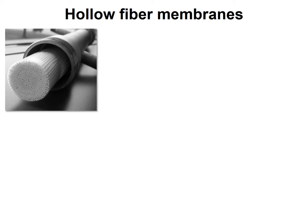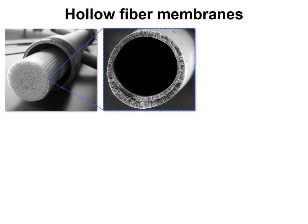In our lab, we develop new types of hollow fiber membranes. We can assemble these fibers into cartridges and test the flux through their shells. As you can see from this cross-sectional view, the fibers are hollow on their inside and only made of a thin shell.